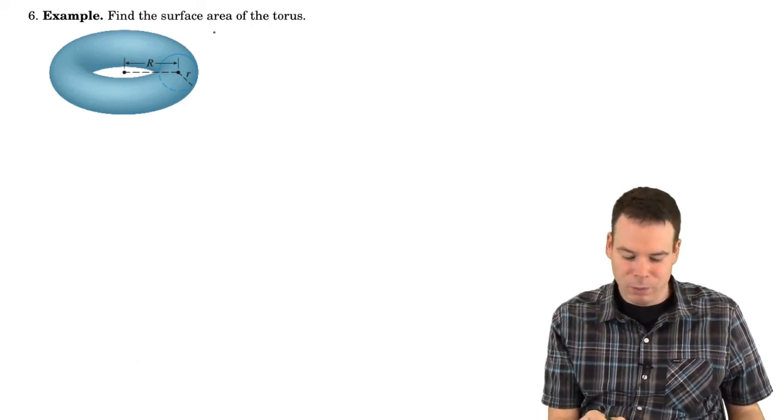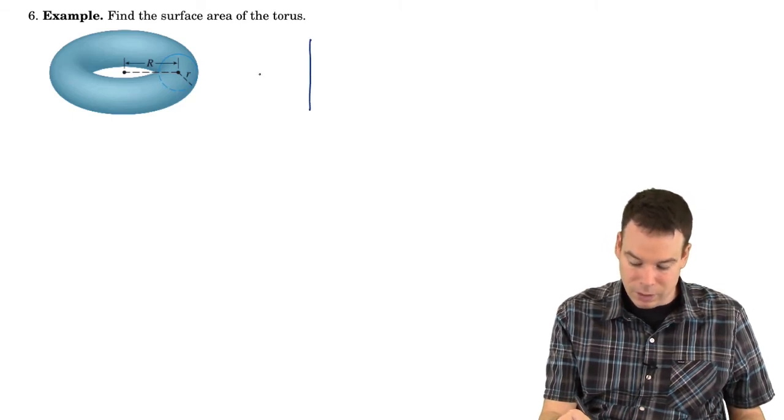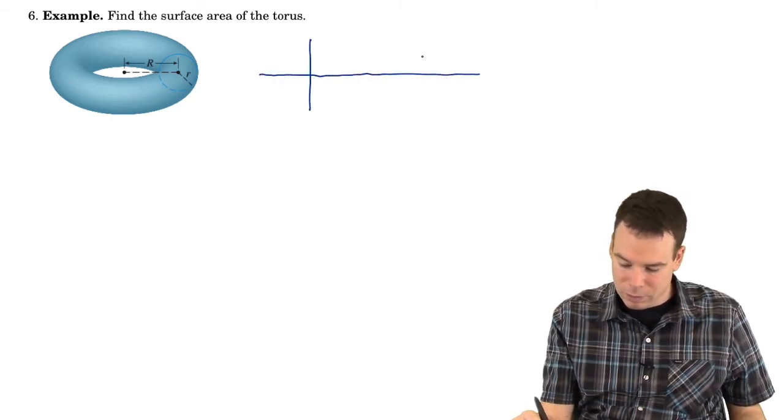So let's have a look at this last example. We want to find the surface area of the torus. Well, the first thing to observe is that this is actually a surface of revolution.